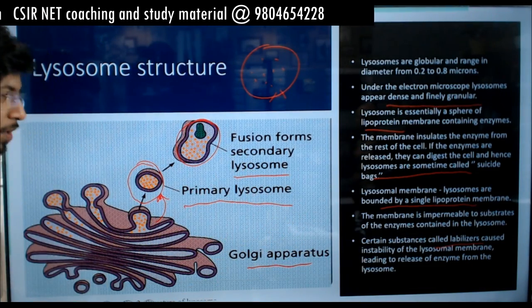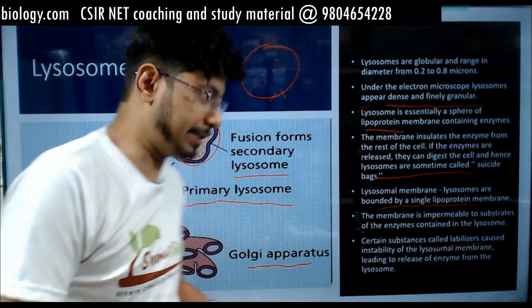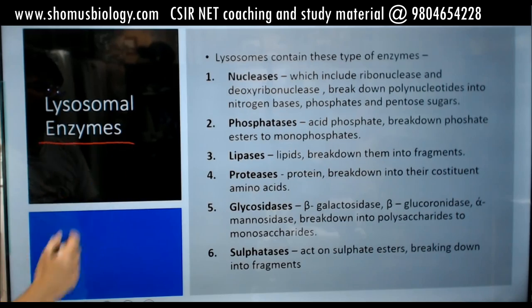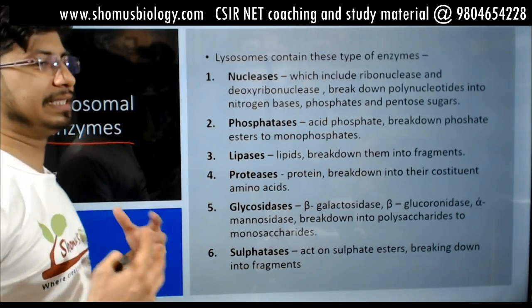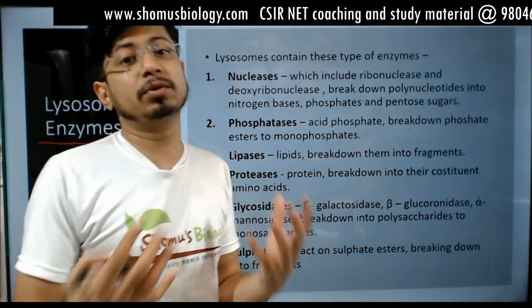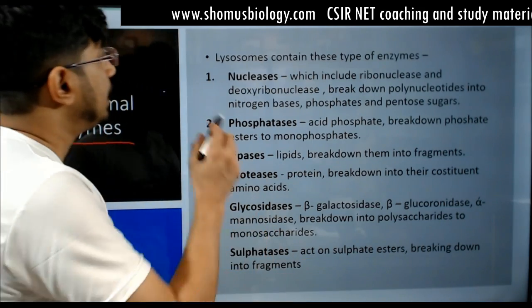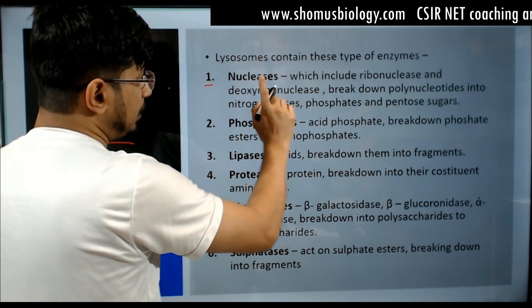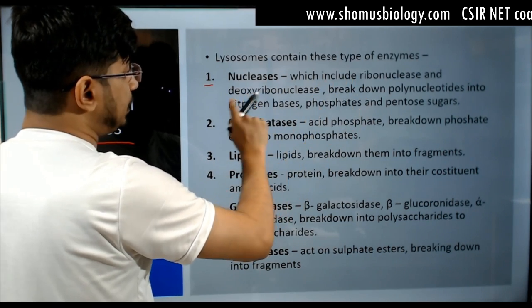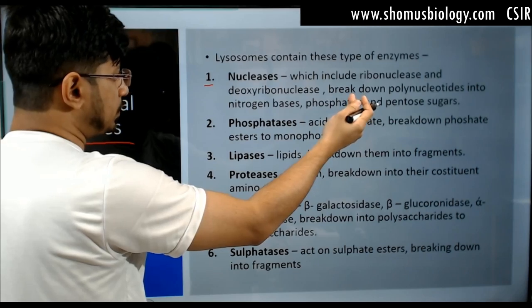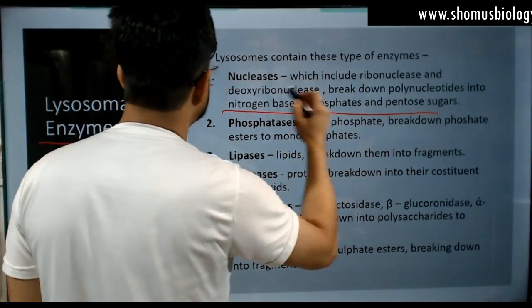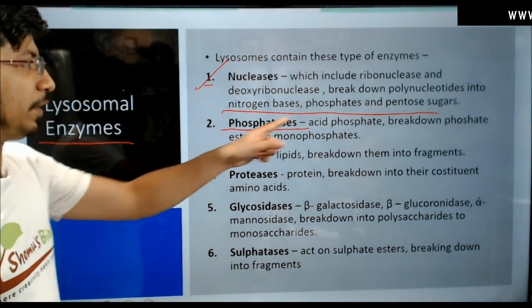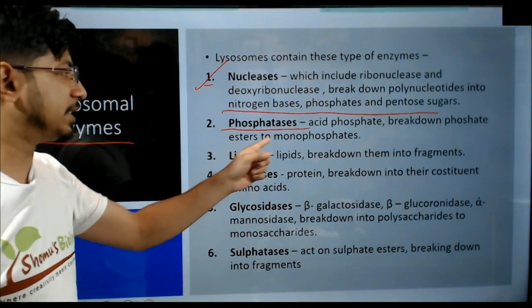When labilizers destabilize the lysosomal membrane, the hydrolytic enzymes can spill out, destroy the cell, and the cell may die — a process related to autophagy, or the cell killing itself. Lysosome is nothing but an enzyme-filled sac, so we need to understand the enzymes it carries. Lysosomal enzymes include nucleases — ribonuclease and deoxyribonuclease — which break down polynucleotides into nitrogenous bases, phosphate, and pentose sugars.